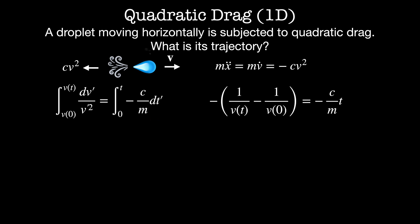So this gives me minus 1 over v of t minus 1 over v naught which equals minus c over m times t. And I'm going to call the timescale m over c tau. Now to solve for velocity as a function of time I have v of t equals v naught divided by 1 plus t over tau. Now I can integrate this once more to find position as a function of time. So I have x naught plus v naught times tau times the log of 1 plus t over tau.